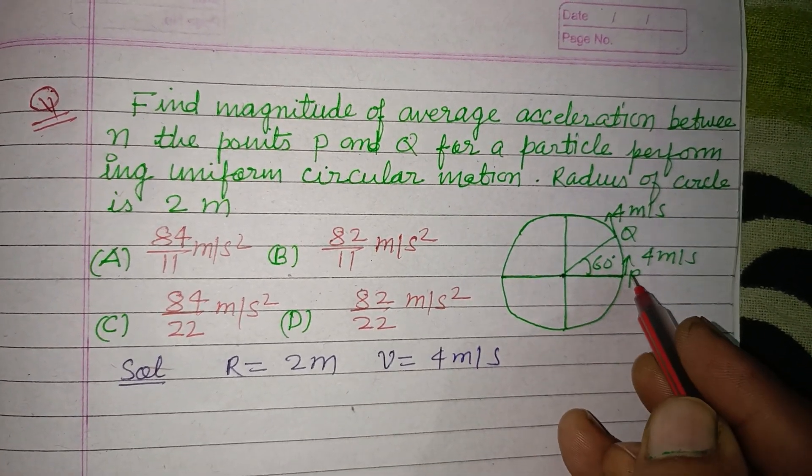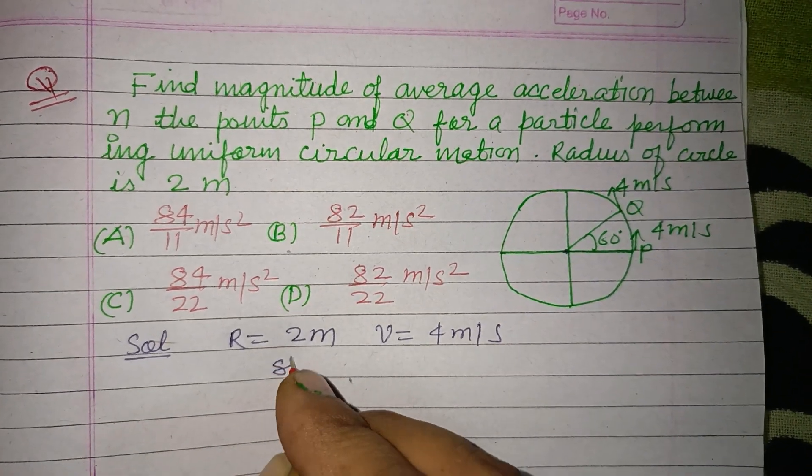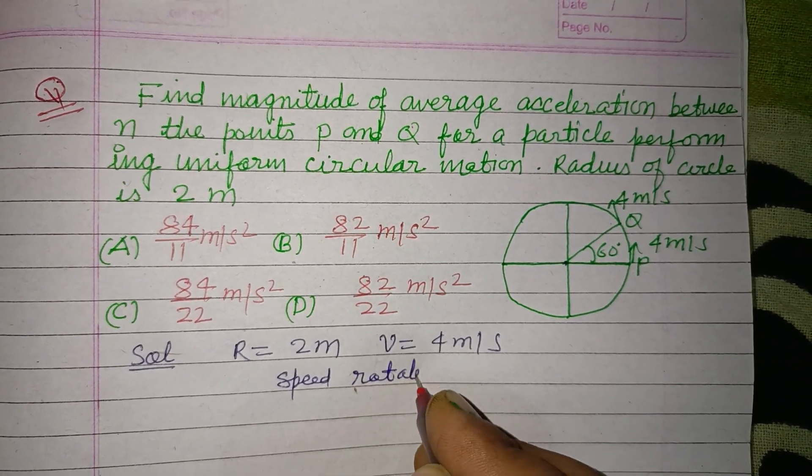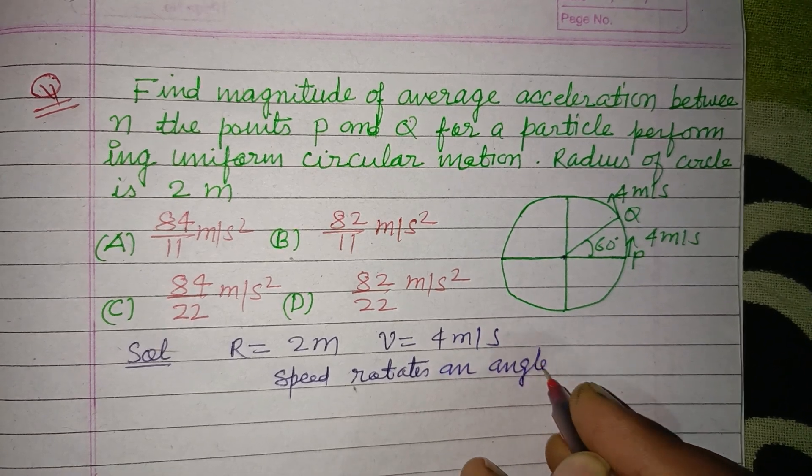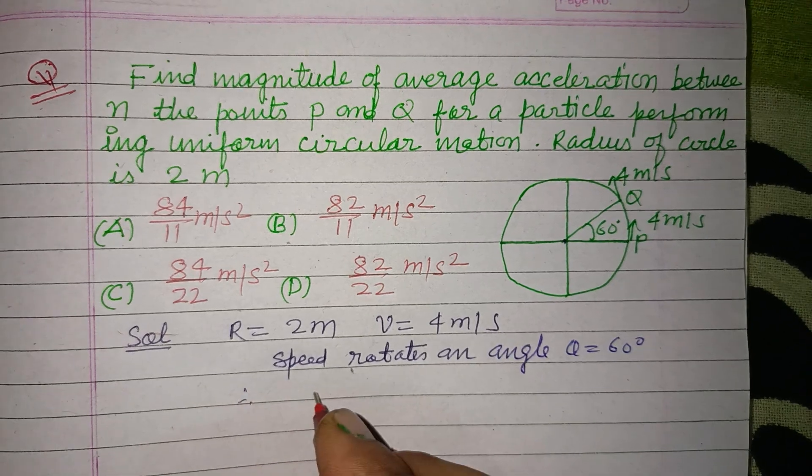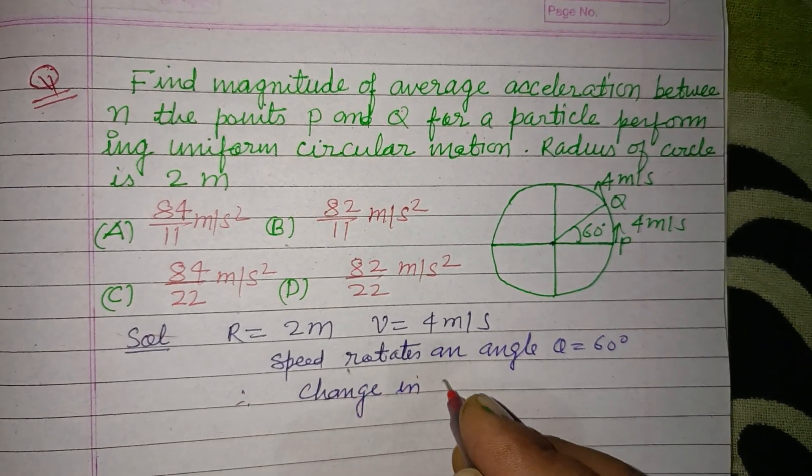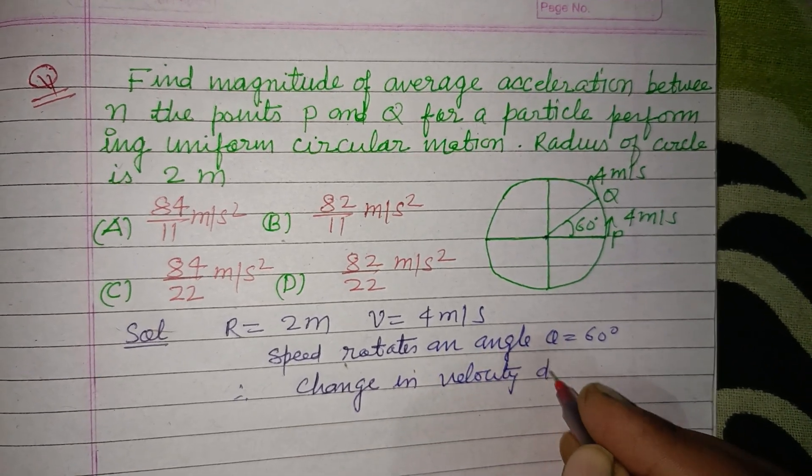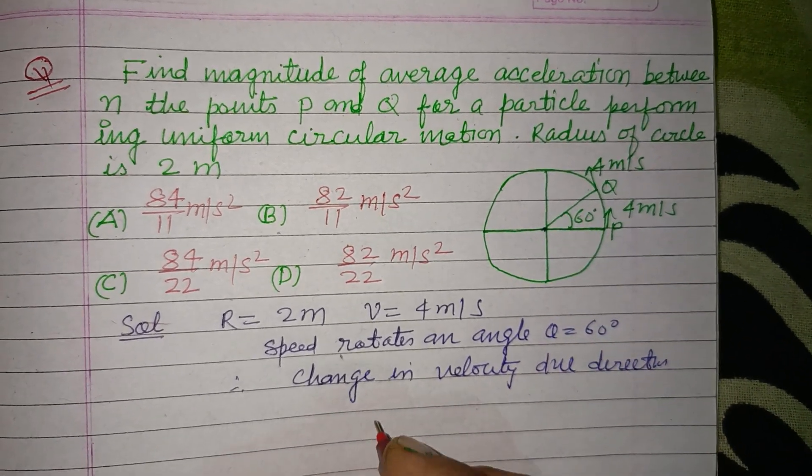The speed is rotated at an angle, here speed rotates at an angle theta equal to 60 degrees, therefore change in velocity due to direction change.